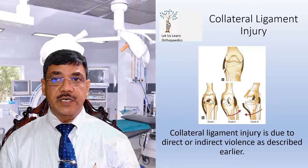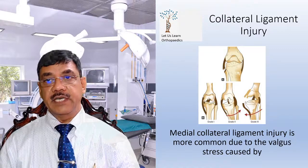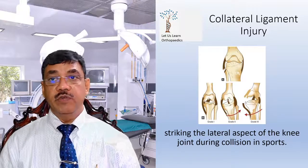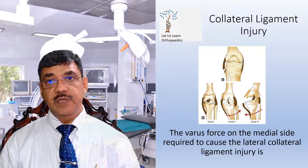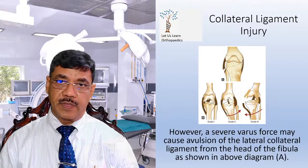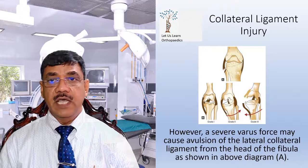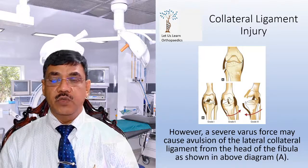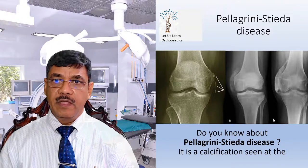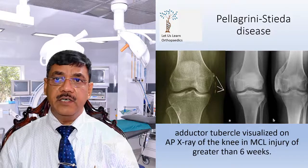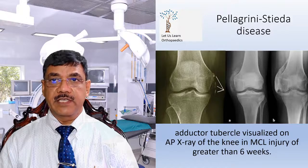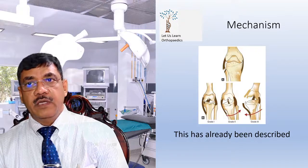Collateral ligament injuries are due to direct or indirect violence as described earlier. Medial collateral ligament injury is more common due to the valgus stress caused by striking the lateral aspect of the knee joint during collision in sports. The varus force on the medial side required to cause the lateral collateral injury is less common because of the protection offered by the other leg. However, a severe varus force may cause avulsion of the lateral collateral ligament. Pellegrini-Stieda disease is a calcification seen at the adductor tubercle, visualized on AP X-ray of the knee joint in MCL injury of greater than 6 weeks.